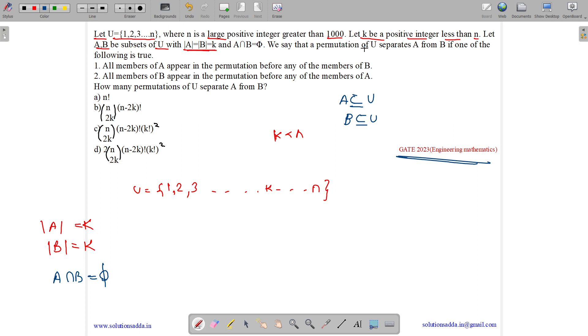We say permutation of U separates A and B if one of the following is true. Either first is true or second is true. All the members of A appear in the permutation before any members of B. So if we have k over here and some part is A and other part is B and some part is also left over.